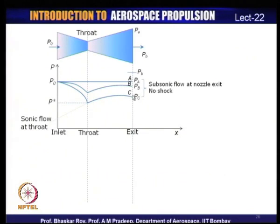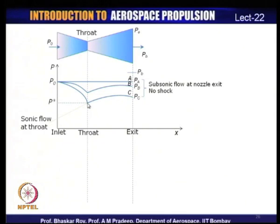As back pressure reaches the critical pressure Pᶜ (i.e., P*), the flow reaches minimum static pressure P* at the throat — M = 1 — but does not achieve supersonic flow subsequently. It becomes subsonic again and static pressure continues to rise in the diverging section.